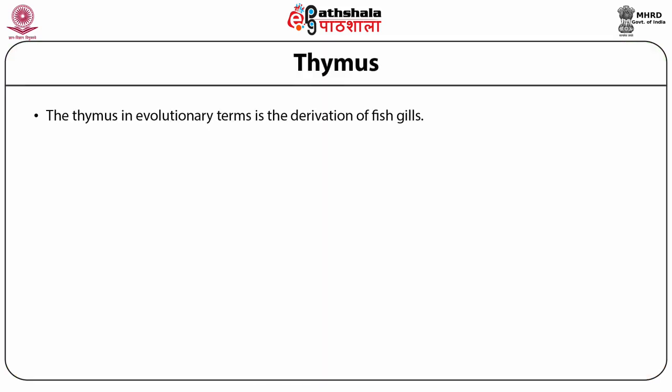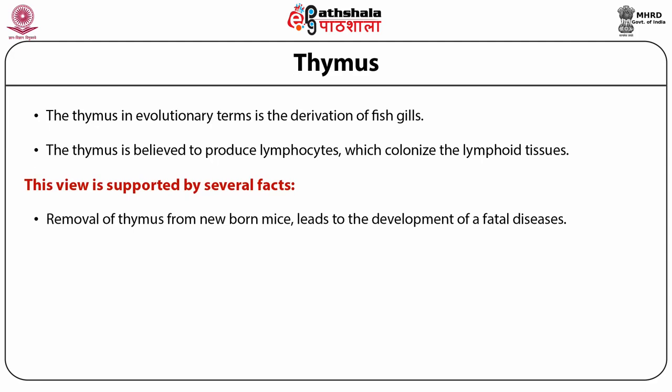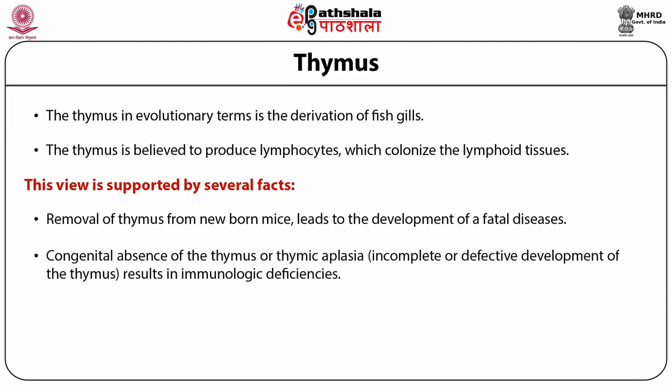The marrow switches from producing red blood cells to concentrating on making white blood cells. This may result in anemia as a side effect of combating infection. The thymus, in evolutionary terms, is the derivation of fish gills. The thymus is believed to produce lymphocytes which colonize the lymphoid tissues. Removal of thymus from newborn mice leads to the development of fatal diseases. Congenital absence of the thymus, or thymic aplasia — incomplete or defective development — results in immunological deficiencies.